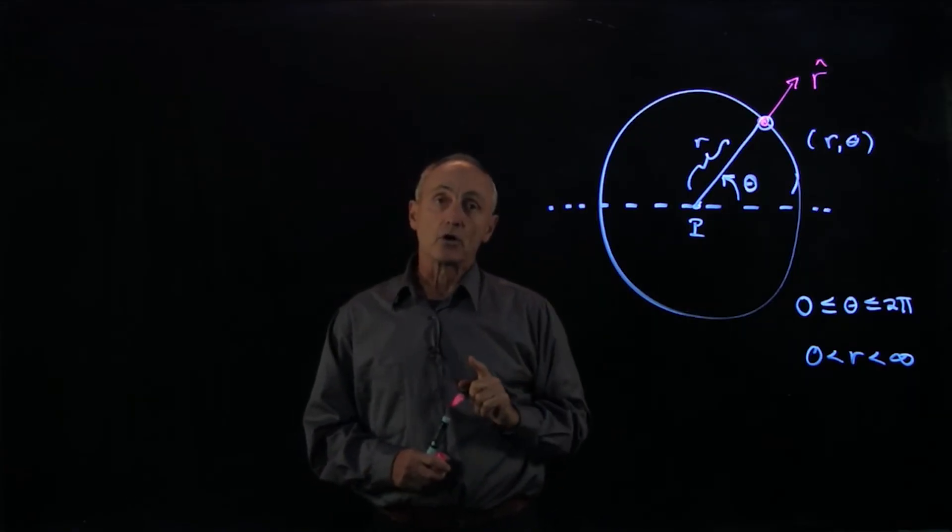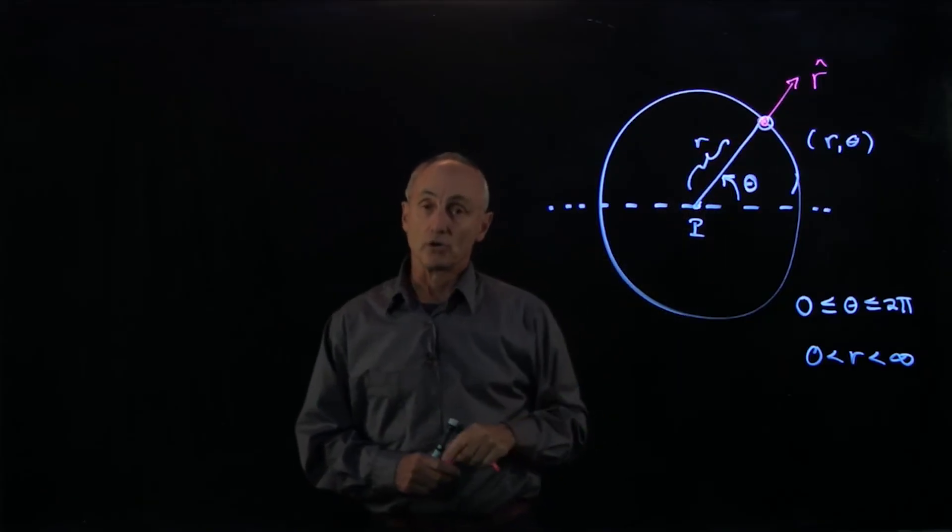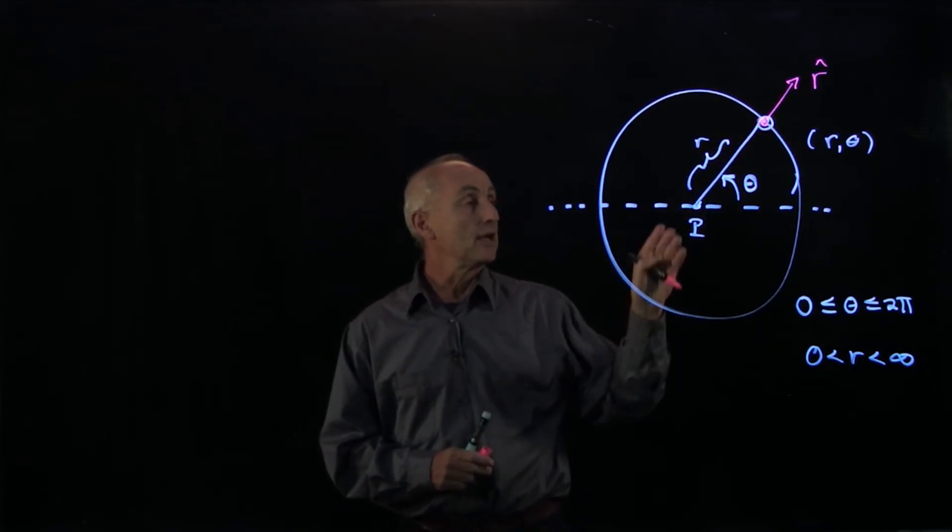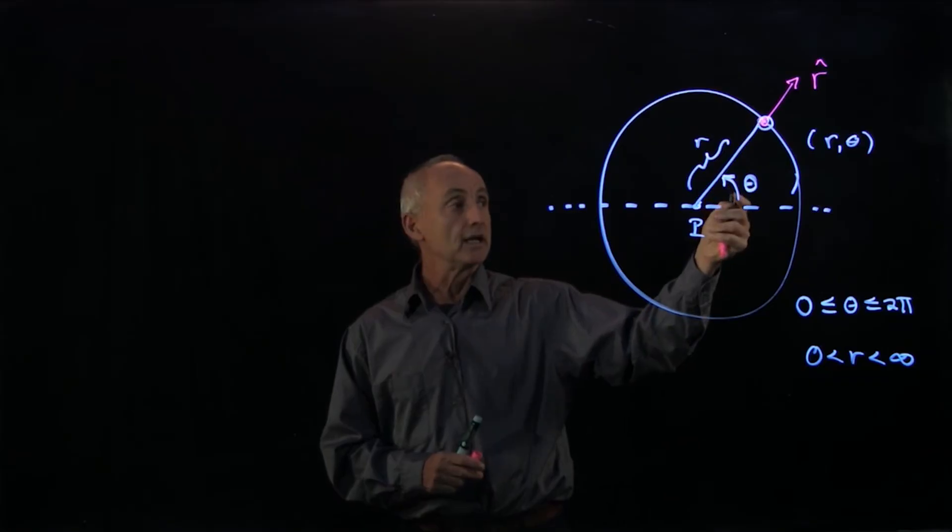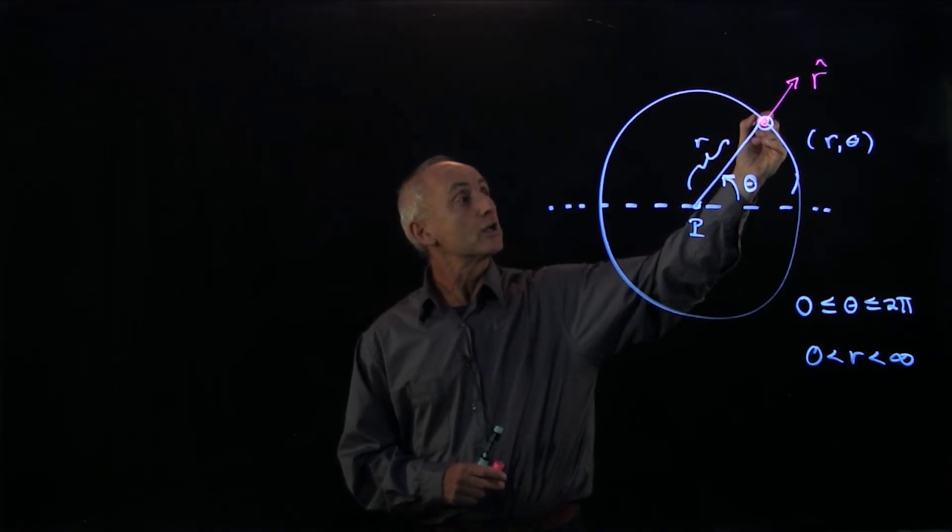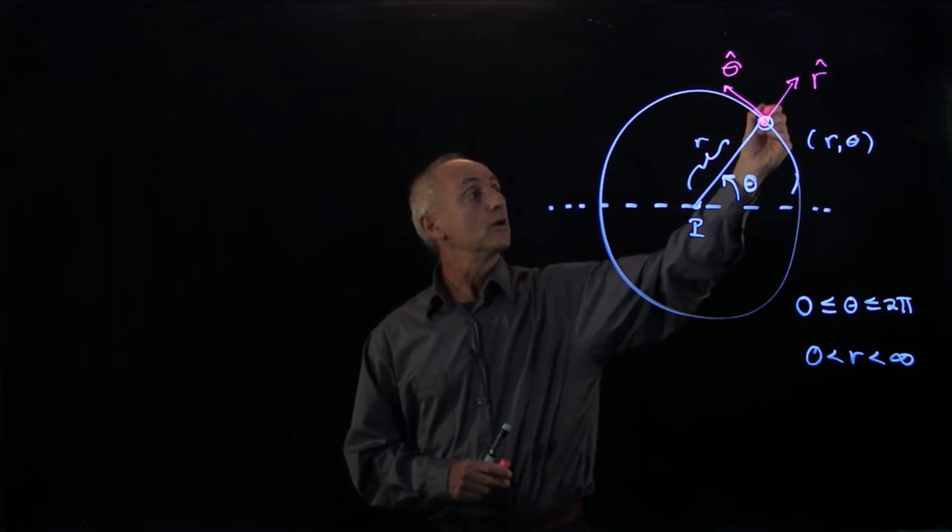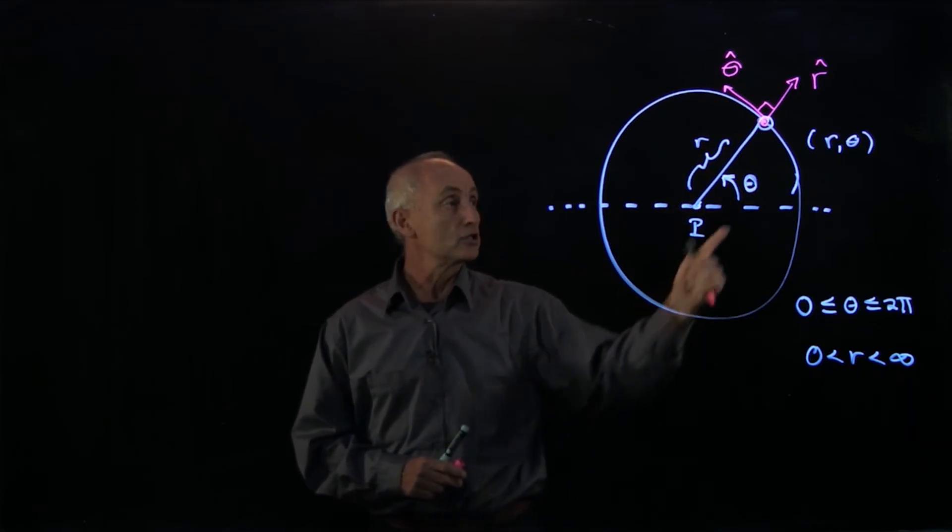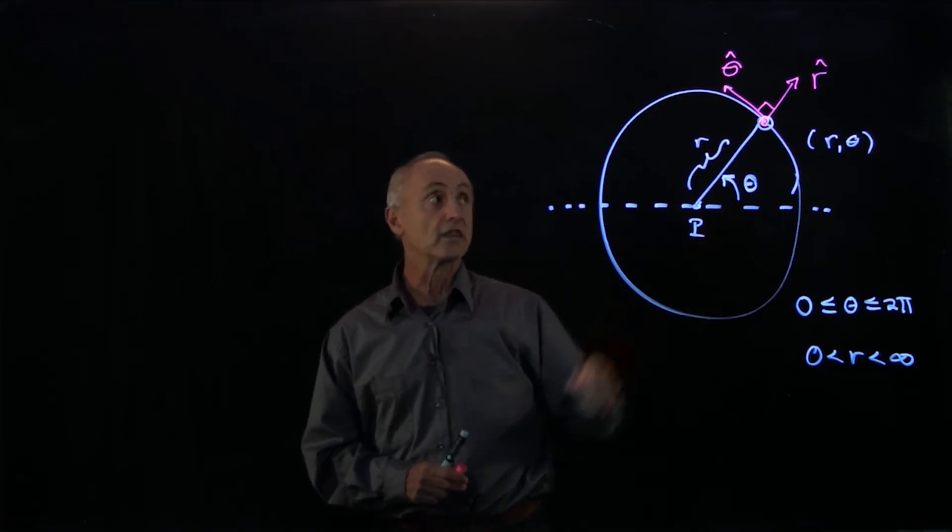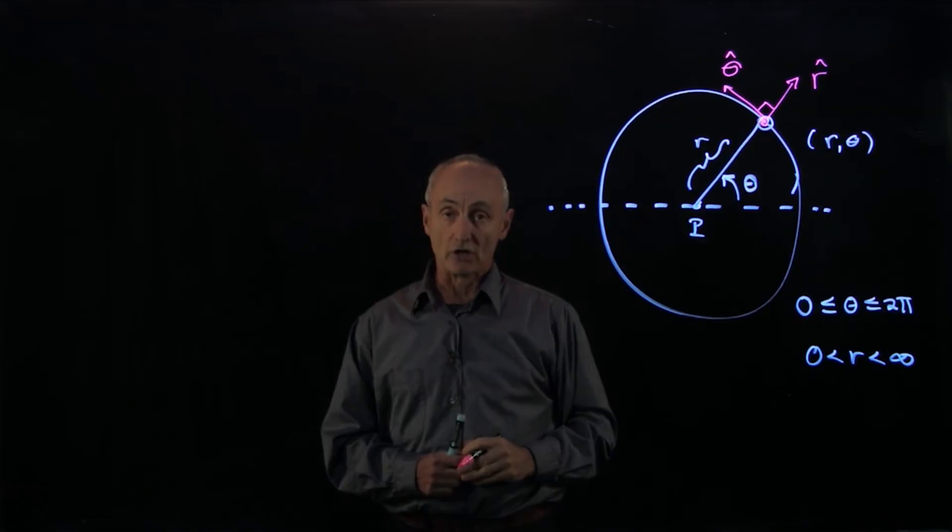What about the theta direction, tangential to the circle in this case? Because theta is increasing in this direction, we choose our tangential unit vector, which we'll call theta hat, at right angles to r hat, to point in the direction of increasing theta. At this point, we now have a set of unit vectors.